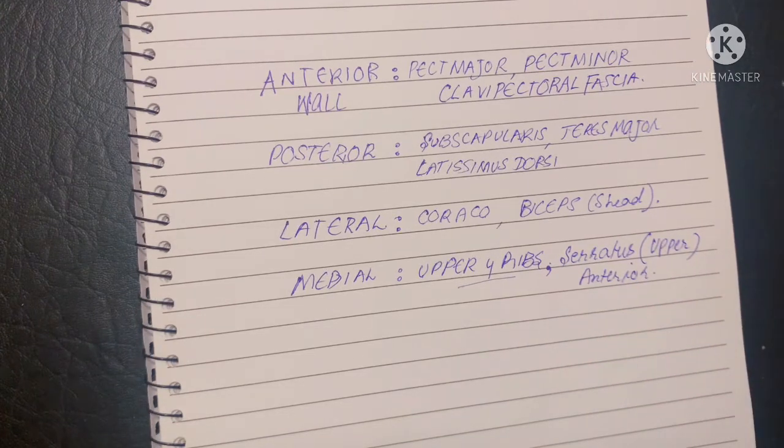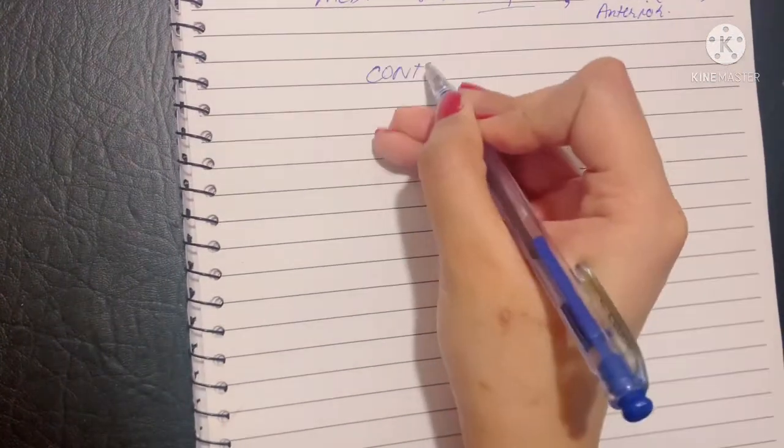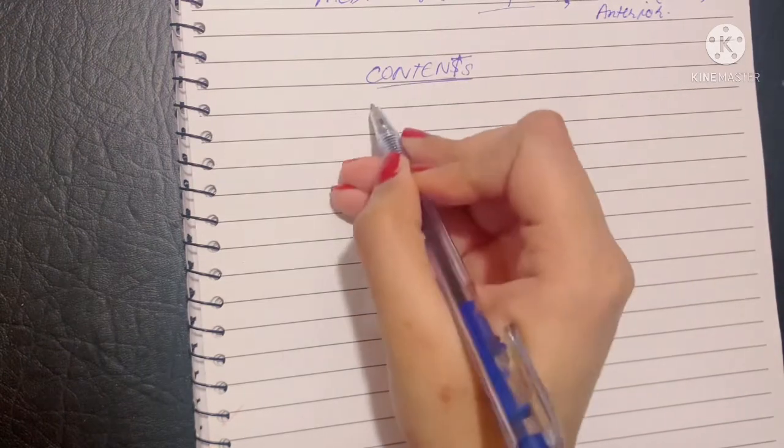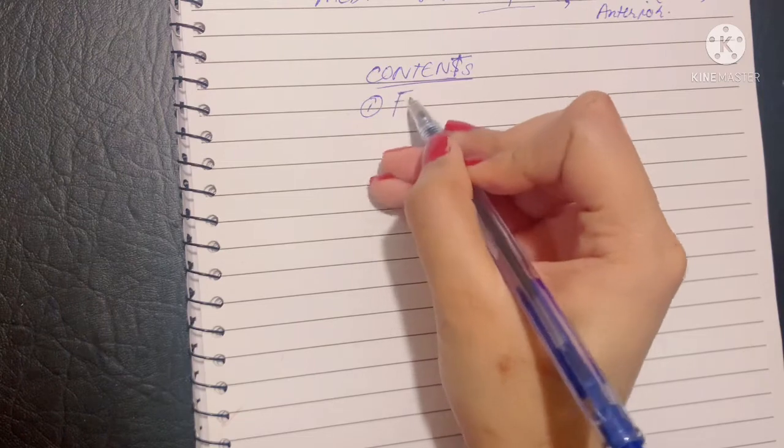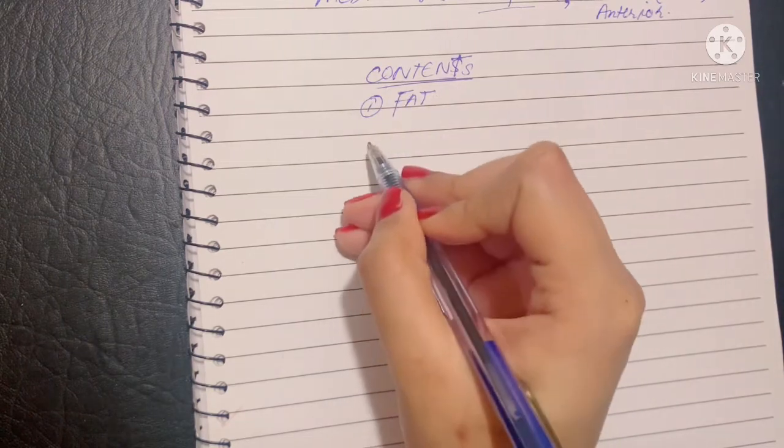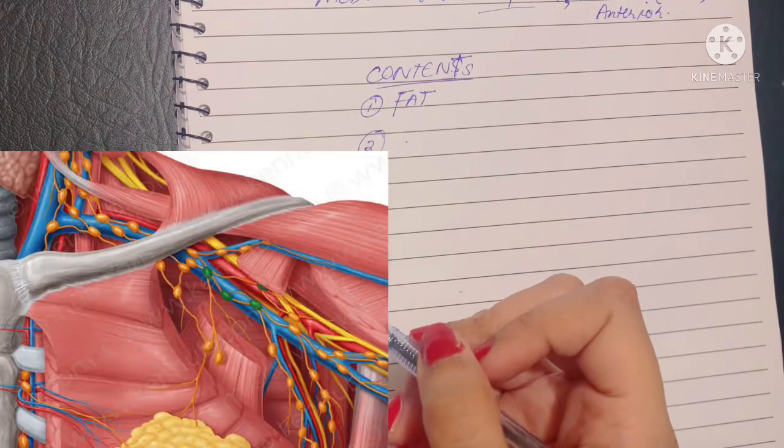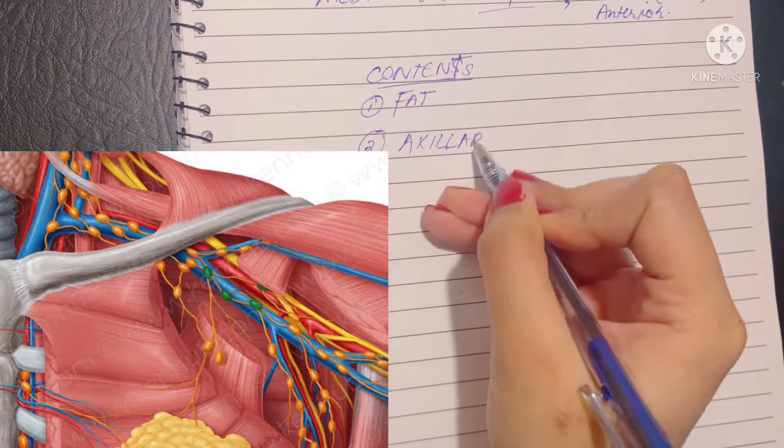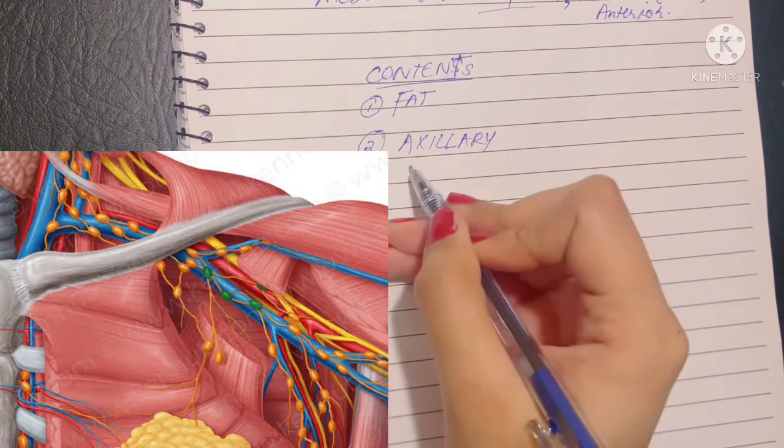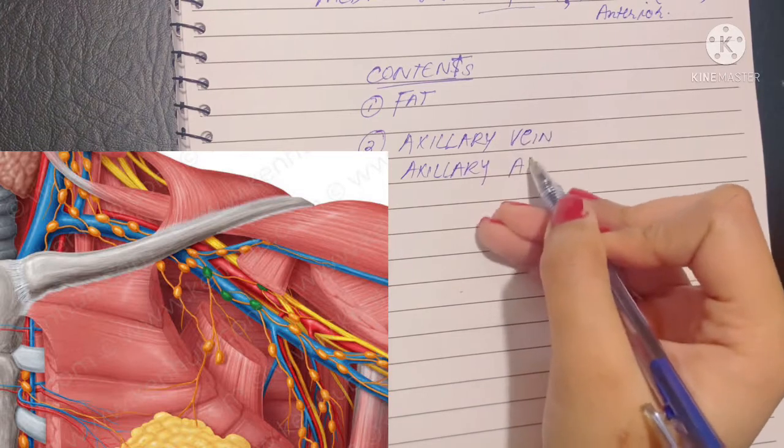So this was all about the boundaries of the axilla. Moving on, let's talk about the contents of axilla. Always remember that the first content or the filling content is the fat, so axillary fat is one of the contents. It's pretty obvious that the vessels in the axilla are named after it. Hence, there is the axillary artery that we'll talk about soon and the axillary vein.